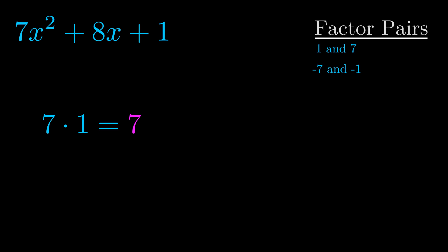The b value is the coefficient on the x term. That's the middle term, the one that we haven't done anything with yet. And really this is the only factor pair that we need.